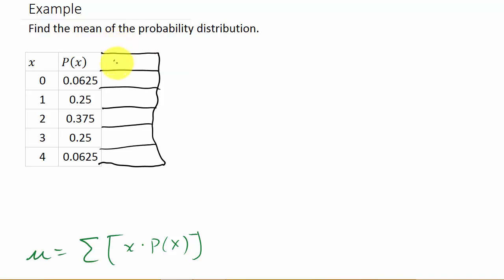And we'll have a column that's x times p of x. So what we're doing is we're just multiplying x times p of x. So 0 times 0.0625, that will give us 0. 1 times 0.25 will give us 0.25. And then 2 times 0.375 will give us 0.75. And then 3 times 0.25 will give us 0.75. And 4 times 0.0625 will give us 0.25.